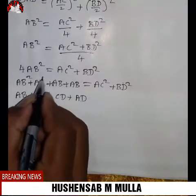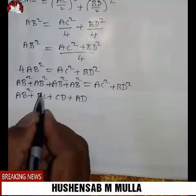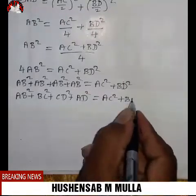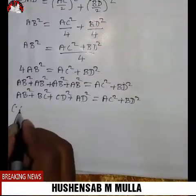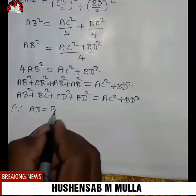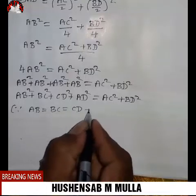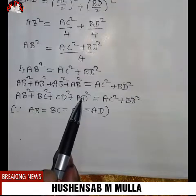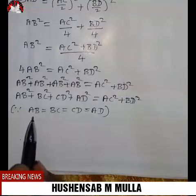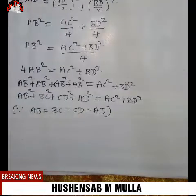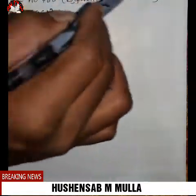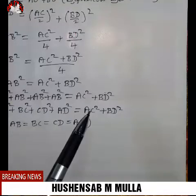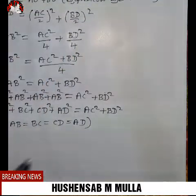AB squared plus BC squared plus CD squared plus AD squared is equal to AC squared plus BD squared. This is AB, BC, CD and AB, BD. Note: AB squared plus BC squared plus CD squared plus AD squared is equal to AC plus BD. Thank you.